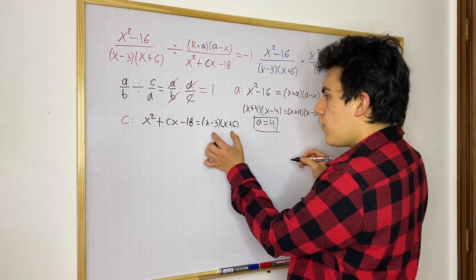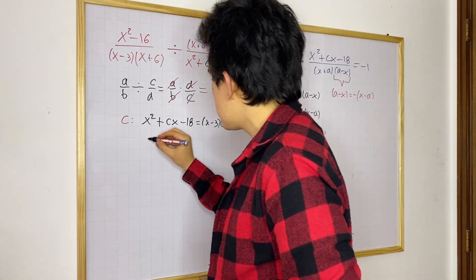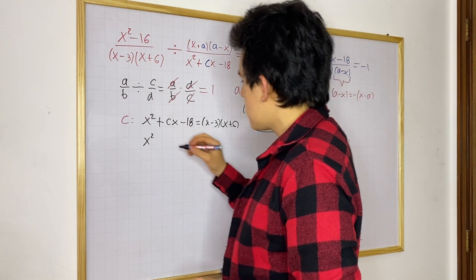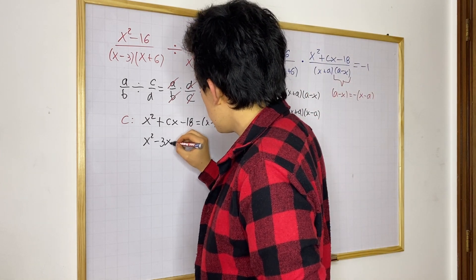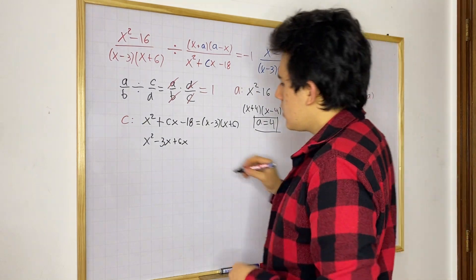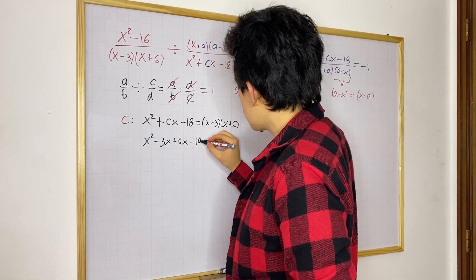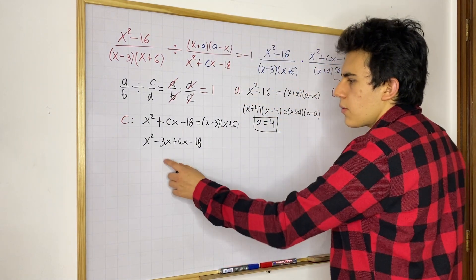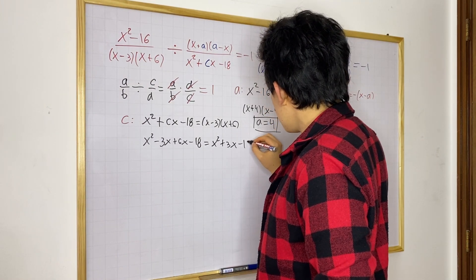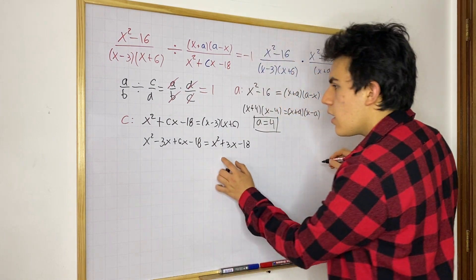And now, if we foil these two factors, let's see how much we get. So, we get X squared, now minus 3X plus 6X, and then minus 18, minus 3 times 6. And we know this is the same as if we did X squared plus 3X minus 18.